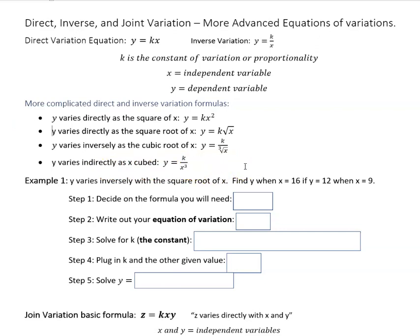So here's an example of using one of those. y varies inversely with the square root of x. Find y when x is 16, if y equals 12 when x equals 9. So first of all, decide on the formula that you'll need. Inversely with the square root of x. Here's our basic inverse and the square root of x instead of just x.